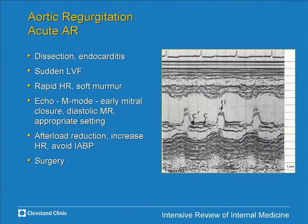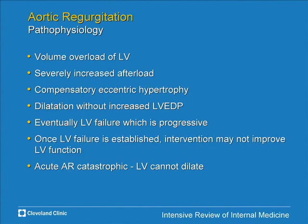Acute aortic regurgitation — from dissection or endocarditis — can be life-threatening. The typical M-mode echo appearance shows early closure of the mitral valve, with a flicker on the mitral leaflets from the AR jet striking it. The ventricle can't expand fast enough to compensate, causing sudden heart failure. These patients can die if not taken to surgery quickly. While arranging surgery, afterload reduction and increasing heart rate to shorten diastole may help.